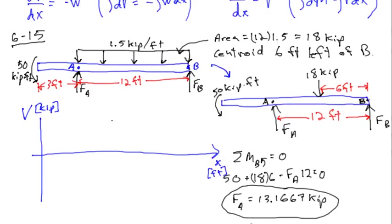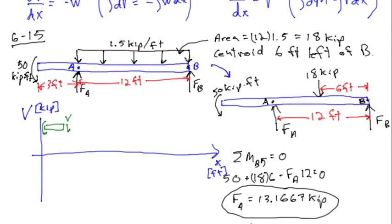Sometimes I draw a little free body diagram of just the small section at the end — it has a bending moment M and shear force V. Doing the sum of forces in the vertical direction gives minus V equals zero, so V equals zero. That's how this whole graph gets started. You don't have to show all that work, but if there's a mistake, showing it can earn partial credit.